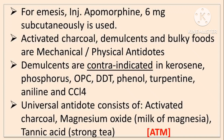Universal antidote consists of activated charcoal, magnesium oxide and tannic acid. The mnemonic ATM can be used: A is activated charcoal, T is tannic acid, M is magnesium oxide. So, universal antidote components are important.